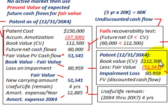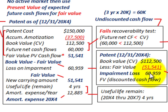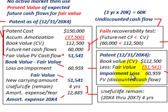The book value or carrying value was $112,500. We subtract the fair value from that — $51,541 — giving us an impairment loss of $60,959. Remember, this fair value was based on the discounted cash flows in this case. So our loss on impairment of $60,959 was simply the book value at that time less the fair value, which was those discounted cash flows.